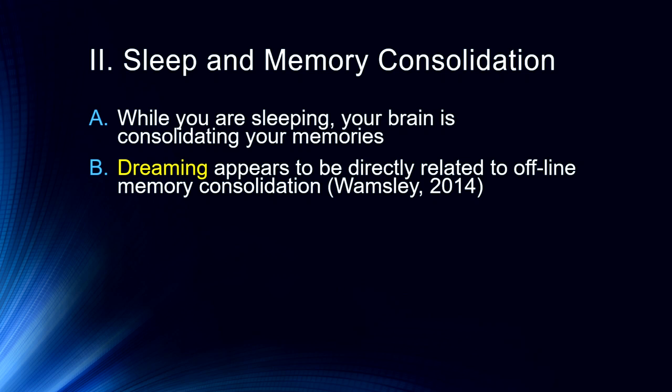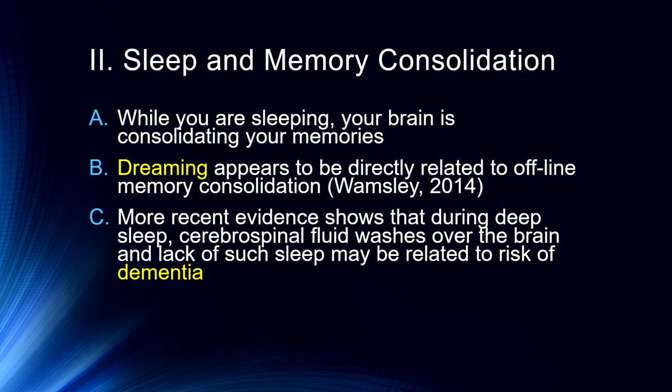More recent evidence shows that during deep sleep, cerebrospinal fluid is washing over the brain — you can actually see waves of it. This helps clear out the detritus from neuronal functioning: neurons burn through a lot of sugar and oxygen, leaving waste products including leftover proteins from neurotransmitter breakdown. Lack of deep sleep may be related to dementia risk. Sleep aids and alcohol can disrupt that deep level of sleep, and sleep apnea — which also prevents deep sleep — is similarly associated with dementia risk.